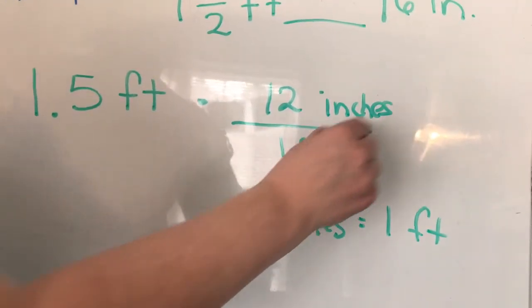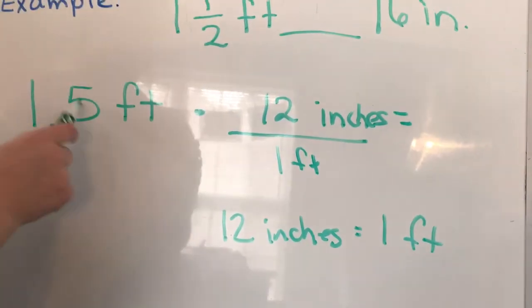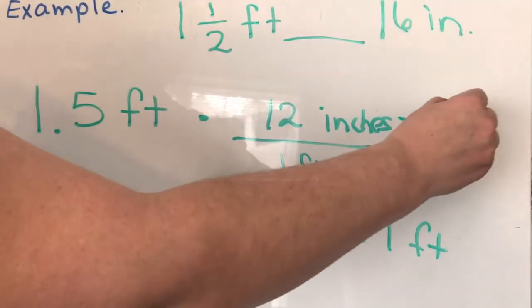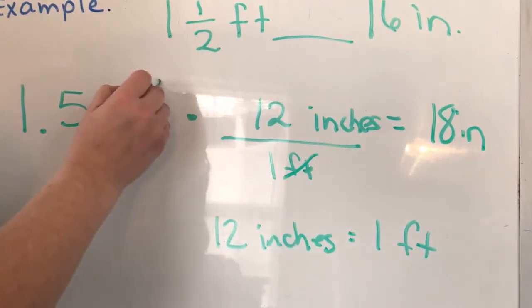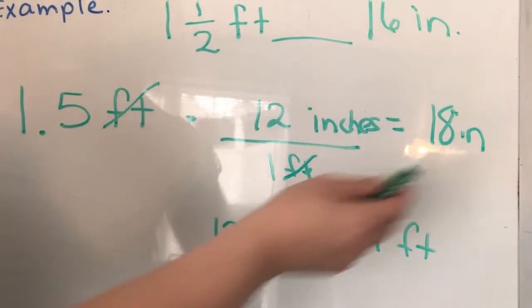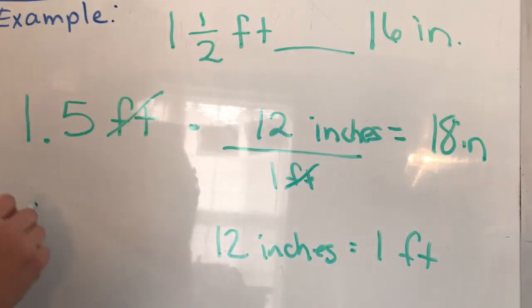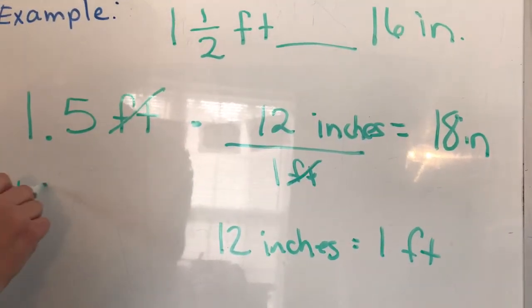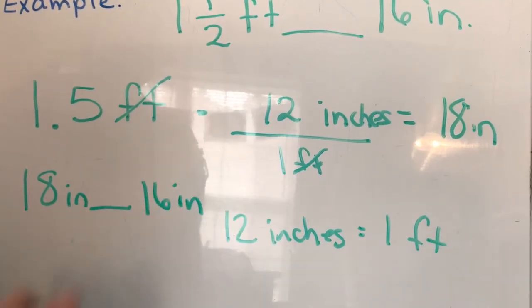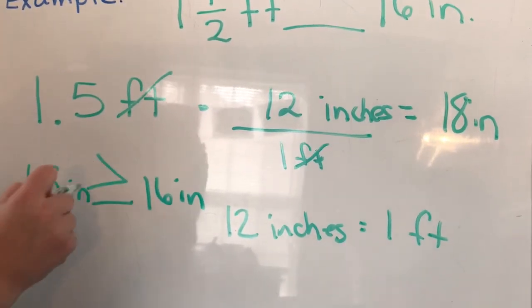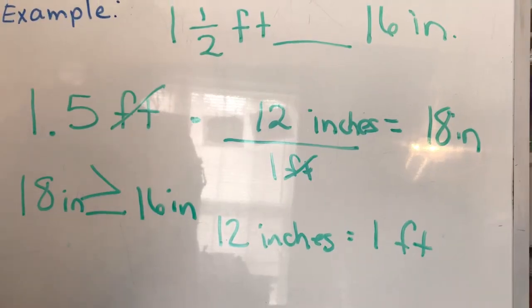And we're going to do what we want to get rid of or the feet on the bottom. So one foot is equal to 1.5 times 12, which is equal to 18 inches and our feet cancel. And we end up with 18 inches. So on this side, if we rewrite our inequality, we get 18 inches compared to 16 inches.